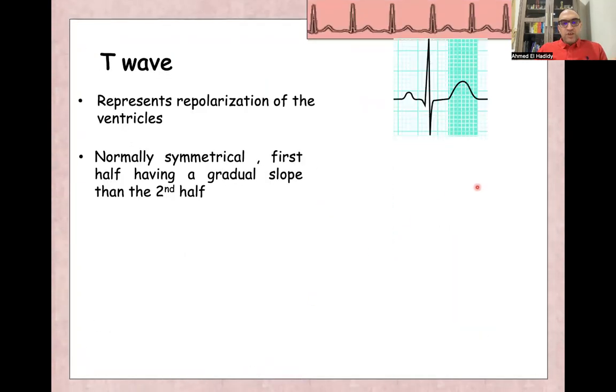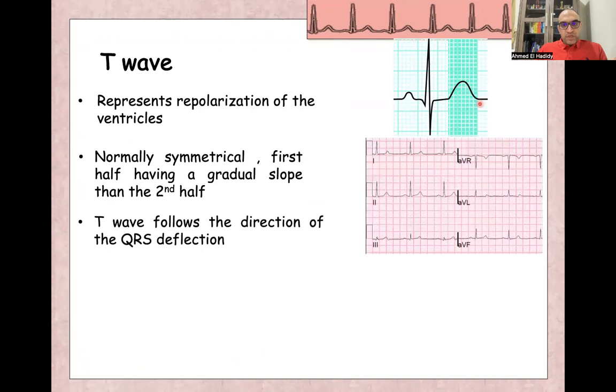T wave represents the repolarization of both ventricles in the T wave. Usually, it's symmetrical with gradual sloping of the first half than the second half. Usually, T wave follows the same direction of the QRS complex.